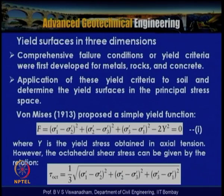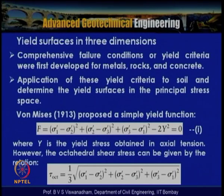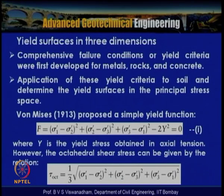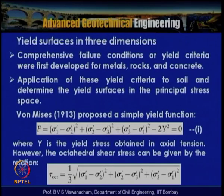Von Mises (1913) proposed a simple yield function given as: f = (σ₁' − σ₂')² + (σ₂' − σ₃')² + (σ₃' − σ₁')² − 2Y² = 0, where Y is the yield stress obtained in axial tension.